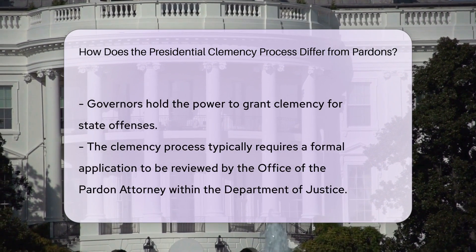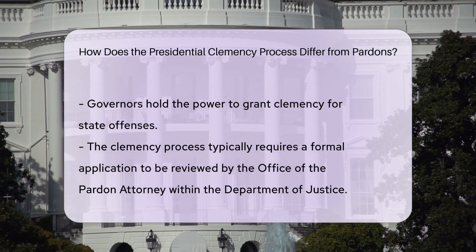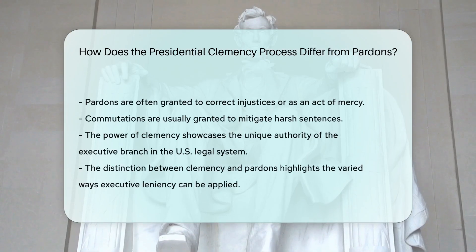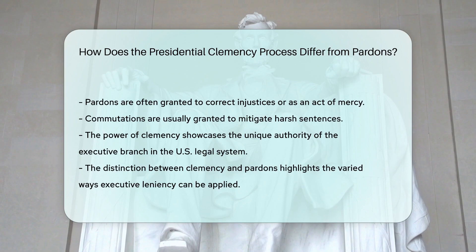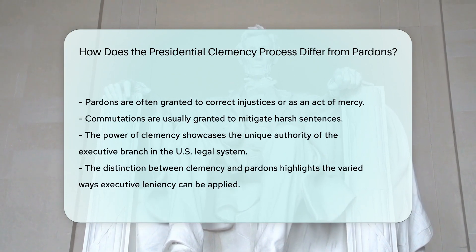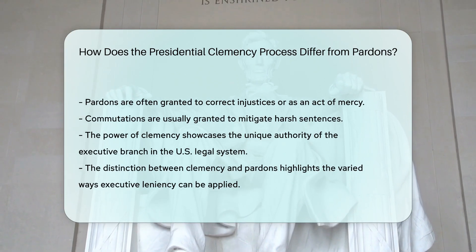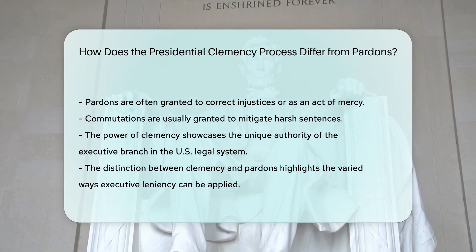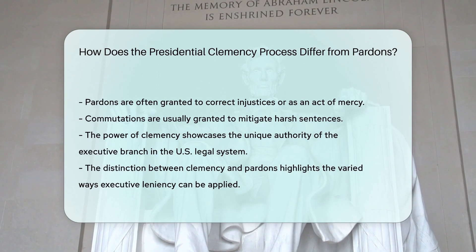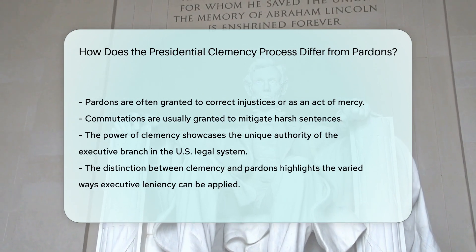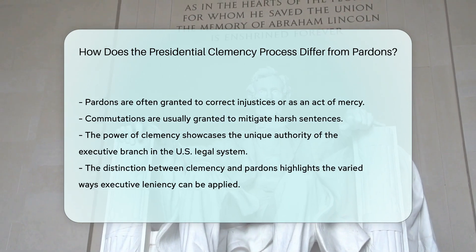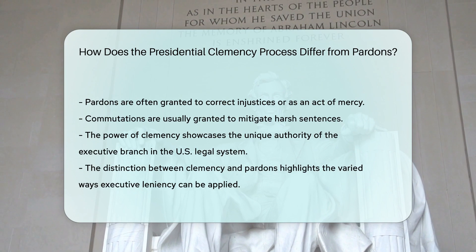The process typically involves a formal application reviewed by the Office of the Pardon Attorney within the Department of Justice. Pardons are often used to correct perceived injustices or show mercy, while commutations are more commonly used to reduce disproportionately harsh sentences. The president's clemency power is a unique aspect of the executive branch's authority in the U.S. legal system.